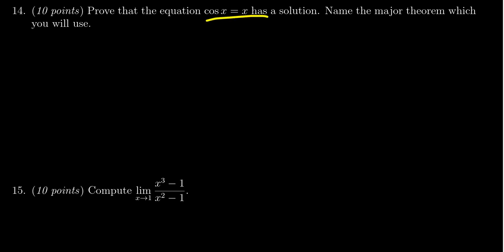We're asked to prove that the equation cosine of x equals x has a solution. And as this is a proof, there's going to be some theorem results we need to use, and so we need to name specifically which major theorem we're going to use.